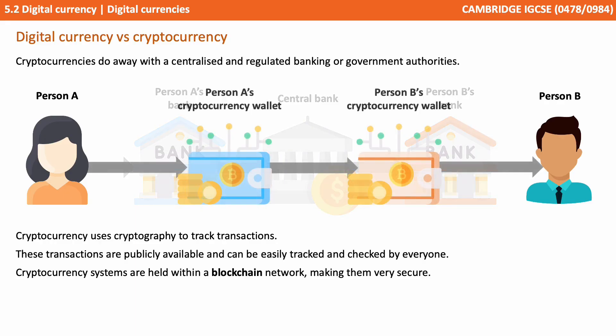Cryptocurrencies do away with a centralised and regulated banking or government authority. Cryptocurrency uses cryptography to track transactions. Transactions are publicly available and easily tracked and therefore checked by everyone, and the systems are held within a blockchain network making them very secure. We're going to look at cryptocurrencies and the blockchain process in a lot more detail in the next video.